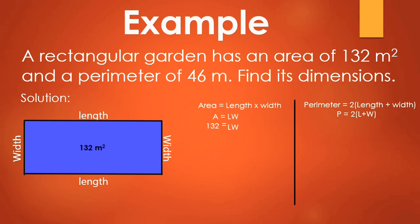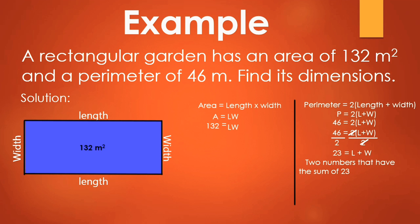So P = 2(l + w). Substitute the value of P: 46 = 2(l + w). Let's simplify. Since we need to find l and w, we need to remove the 2. By dividing both sides by 2, 46 divided by 2 gives us 23, and 2 divided by 2 gives 1. So we get: l + w = 23. We now have two equations: 132 = l × w, and 23 = l + w. We need to find two numbers whose sum is 23 and whose product is 132.